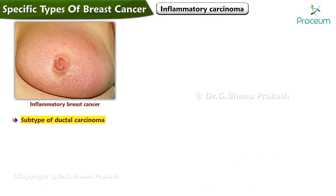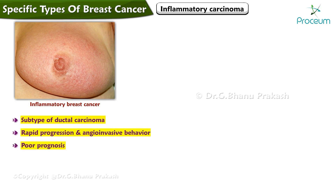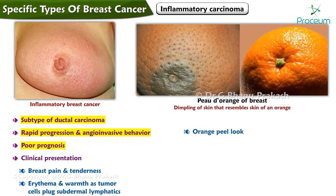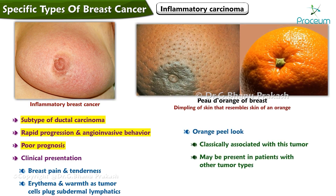Inflammatory carcinoma is a subtype of ductal carcinoma characterized by rapid progression and angioinvasive behavior, carrying a poor prognosis. Clinical presentation includes breast pain and tenderness, erythema, and warmth as tumor cells plug subdermal lymphatics. The classic appearance is peau d'orange, an orange peel look, which may also be present in patients with other tumor types, along with breast lymphadenopathy.